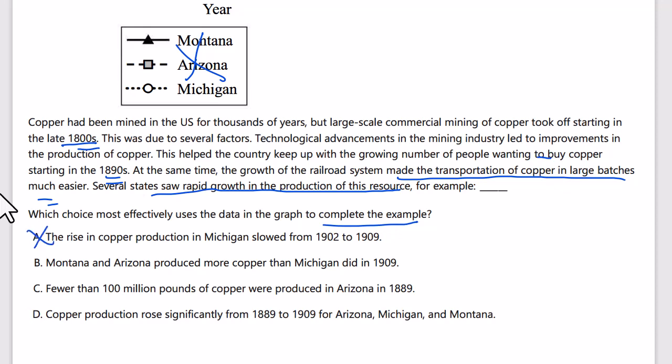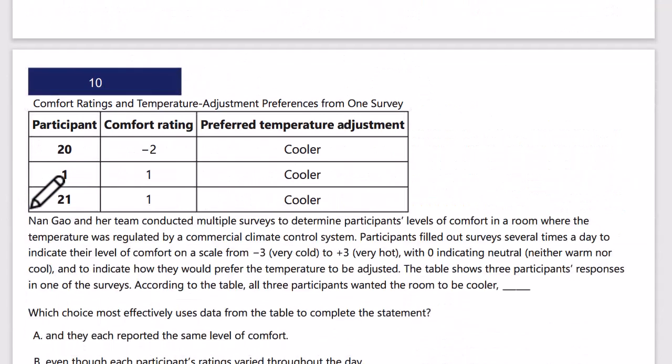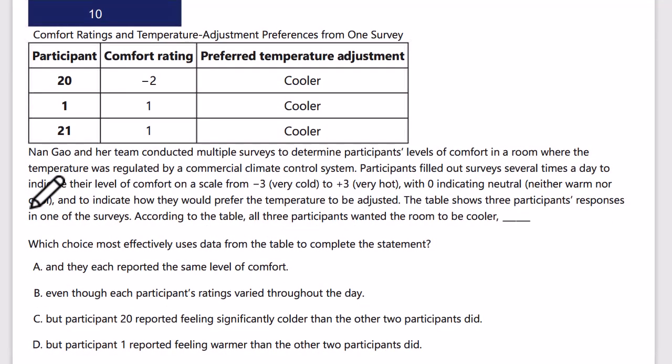From the graph, from the 1890s to 1902 to 1909, production goes from basically 100 or less to 200 to 300 — it's the rise of all states over time that we want to see in the answer. Answer A says rising copper production in Michigan slowed — that doesn't support the point. Answer B says Montana and Arizona produced more than Michigan in 1909 — that's about differences between states, not growth. Answer C says fewer than 100 million pounds were produced in Arizona — that shows no growth. Answer D says copper production rose significantly from 1890 to 1909 in all states — that's the correct answer.